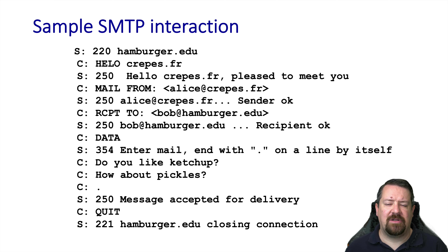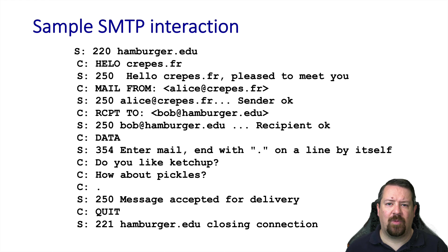Here is a sample exchange of the SMTP protocol. Note that each line is designated S or C for server or client, so we're seeing both sides of the exchange. When the TCP connection is established, the server identifies itself with the code 220 and its domain name. The client then identifies itself with the hello message and its domain name. The server responds with the code 250, which means it is ready to accept email. The client then populates several fields for the email header, including the mail from and the recipient field, each of which are one-line directives acknowledged individually by the server.